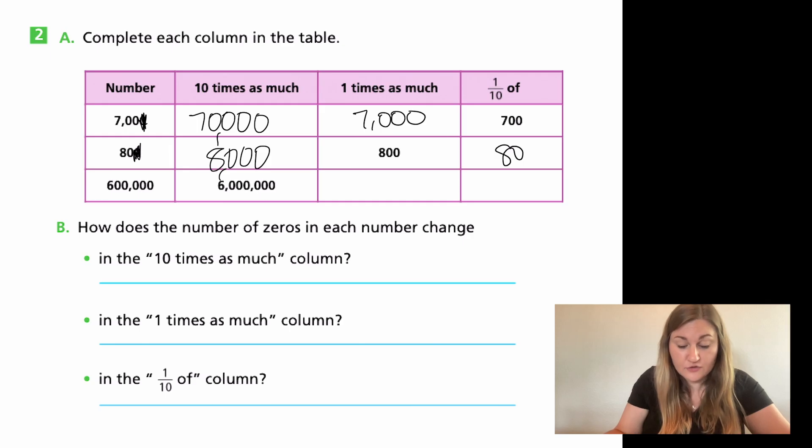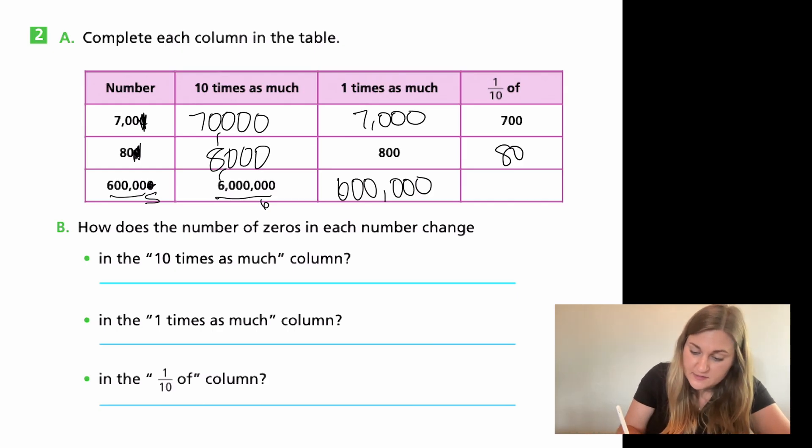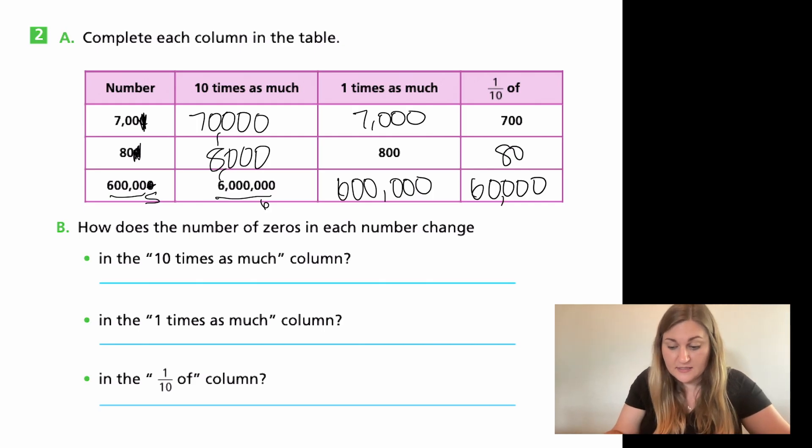Now looking at 600,000. If I do ten times as much, let's go ahead and count the zeros because these are big numbers. So in that 600,000 here, I have one, two, three, four, five zeros. Now remember, I need to add one more zero to the ten times as much. So in this number here, saying six million, I have six zeros. And now we can see going from five to six, I did add that one zero. I found ten times as much. Again, one times as much, just take my original number of 600,000. Now finding one tenth of, I need to take away one of those zeros. So now I'm only going to have four zeros following that six. So six with four zeros leaves me at 60,000. Showing that 60,000 is one tenth is smaller than my original 600,000.